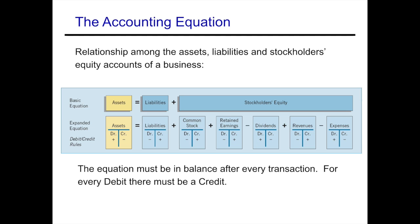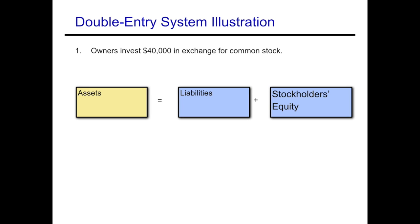We're going to go through some examples. Press pause after each one appears on screen and see if you can figure out what accounts are affected, what categories of accounts are affected, and whether it's going up or down. Example one: owners invest $40,000 in exchange for common stock. The company is receiving $40,000 in cash, which is an asset, and they're issuing stock, so owner's equity is increasing. Assets go up $40,000 and equity goes up $40,000.